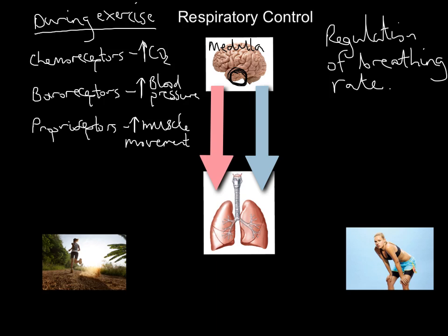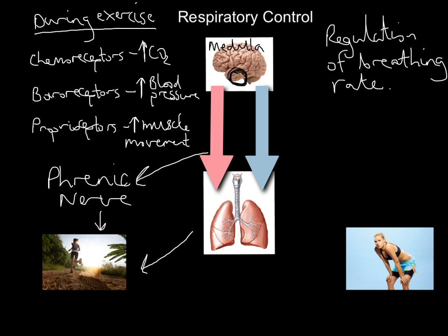Those first two points are exactly the same for the heart as for the lungs. Where does it differ? For the heart we sent an impulse down a sympathetic nerve to the SA node, causing an increase in heart rate. This time we are sending an impulse down the phrenic nerve — into the diaphragm, the external intercostals, and the pectoralis minor — all the muscles that help us take big, deep breaths in.